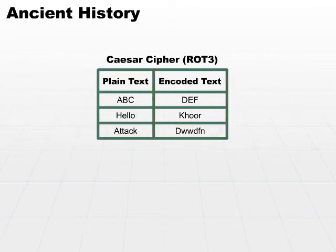All that the rotate3 cipher would do is take each character and count up three more characters and rotate around. In other words, with our first plaintext ABC, you look at the first character A, go to the third character past that, which would be D.